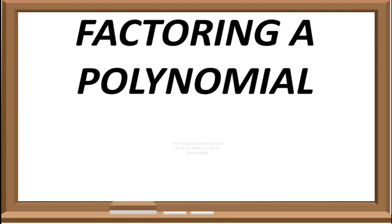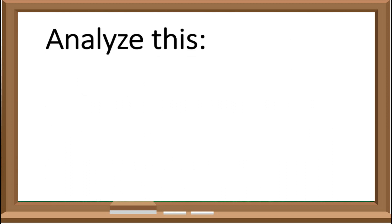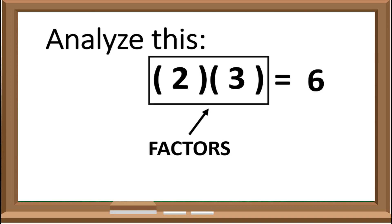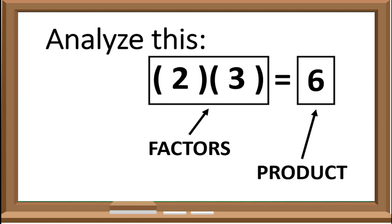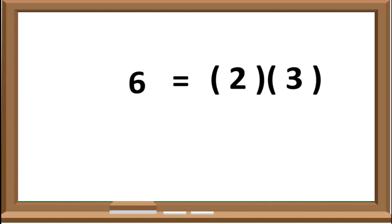Factoring polynomial is rewriting a polynomial as a product of two or more polynomials. To understand more on the meaning, let us take this as an example. If 2 times 3 is equal to 6, these 2 and 3 are what we call Factors, and this 6 is what we call Product. In factoring, we will be looking for the factors of a given number or an expression, which means all the problems in factoring are the products of a number or an expression.